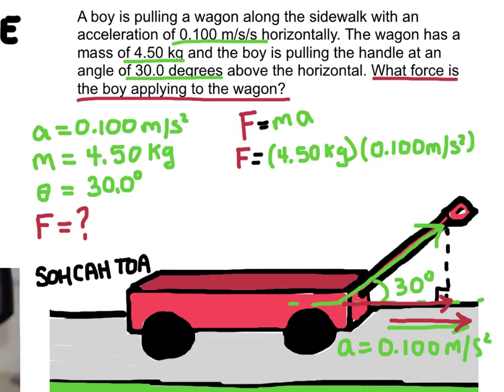So let's start by solving for the force in the horizontal direction here. So I plugged in the numbers that I know, the mass and the acceleration. And I'll solve for force, and force is going to be equal to 0.450 newtons. And remember, that's the bottom side of that triangle.